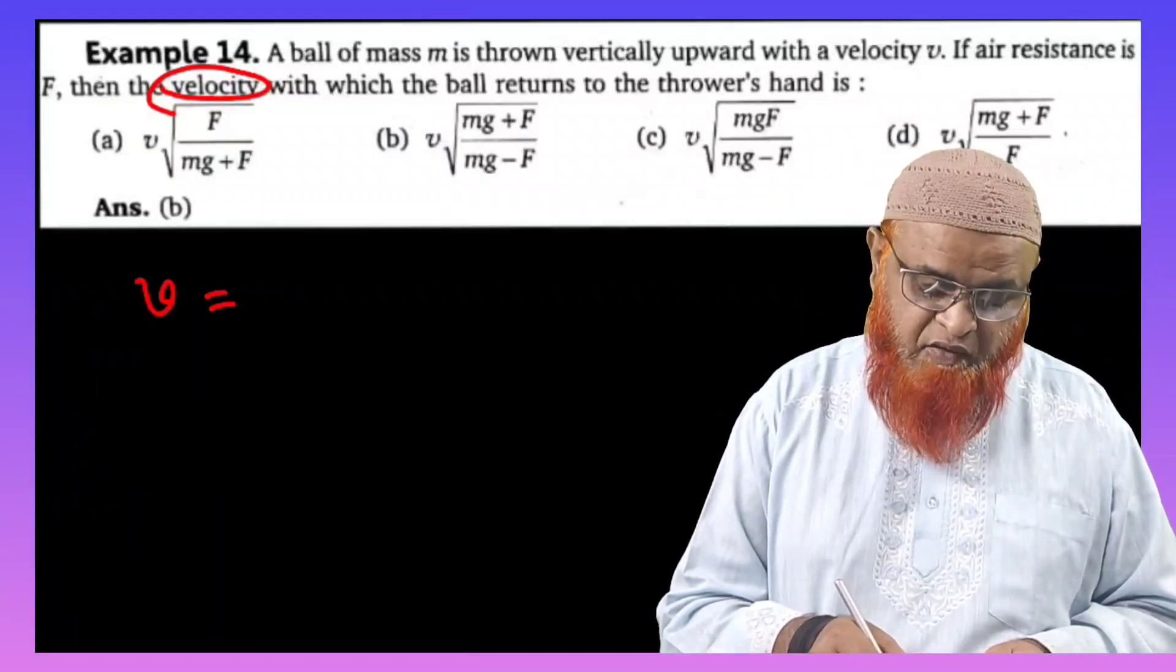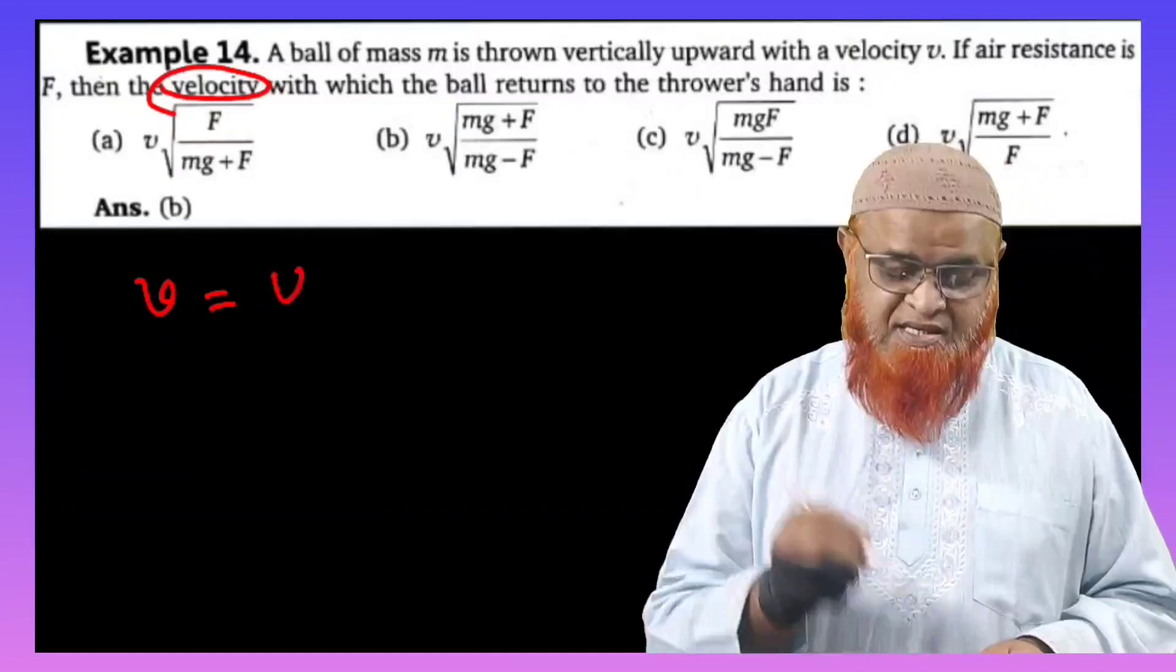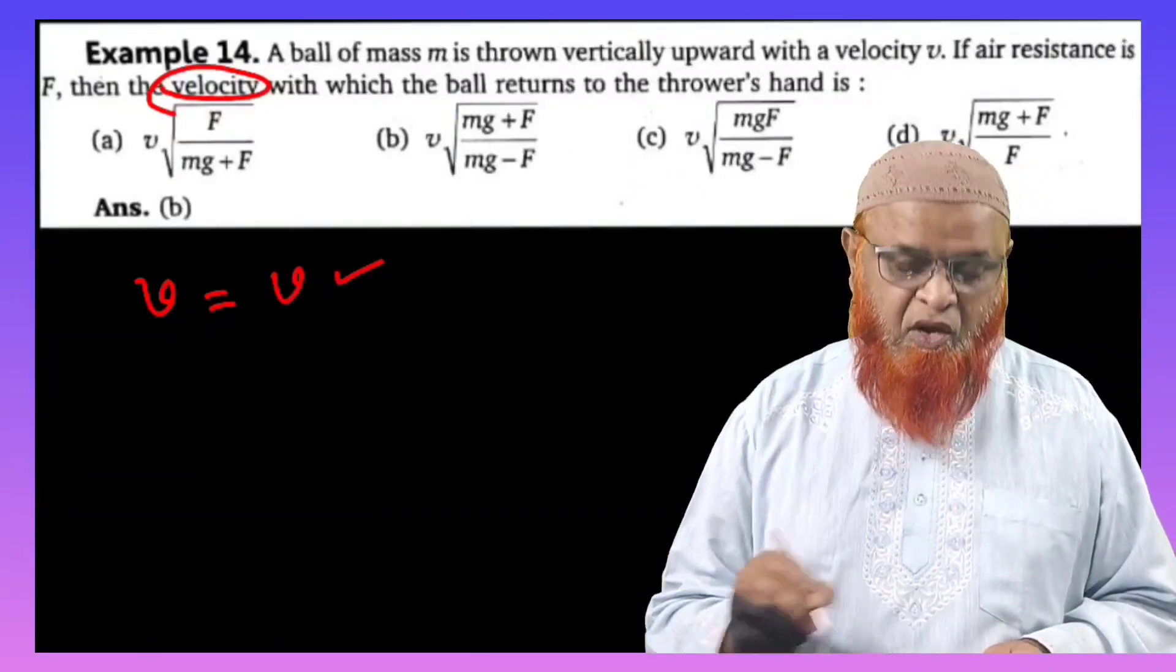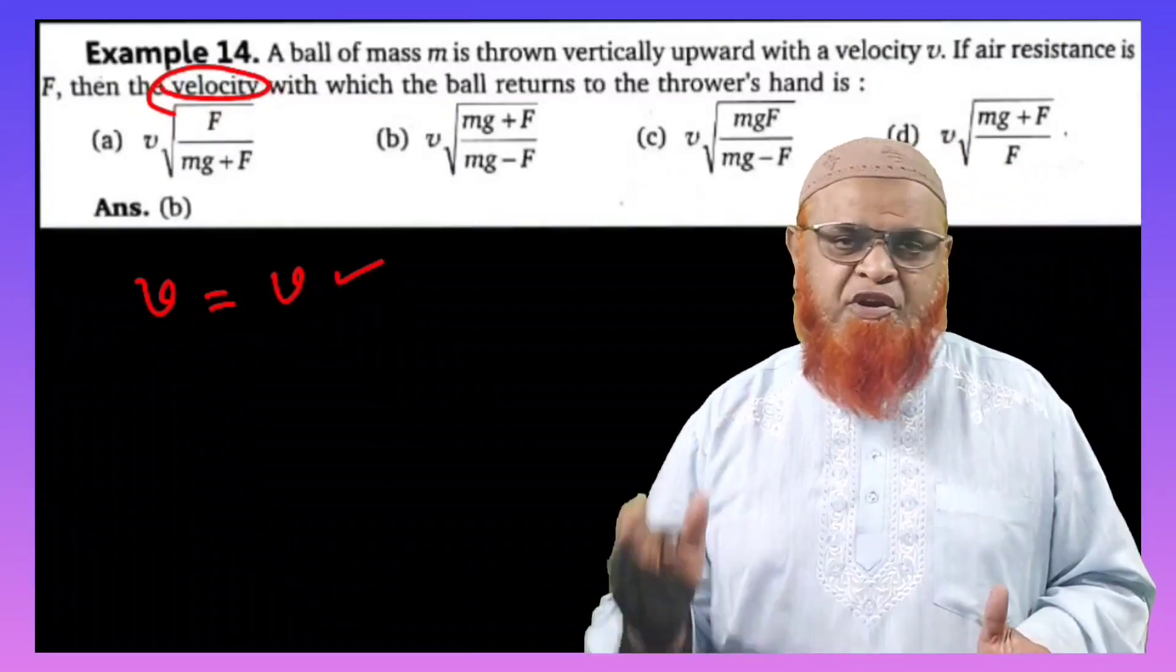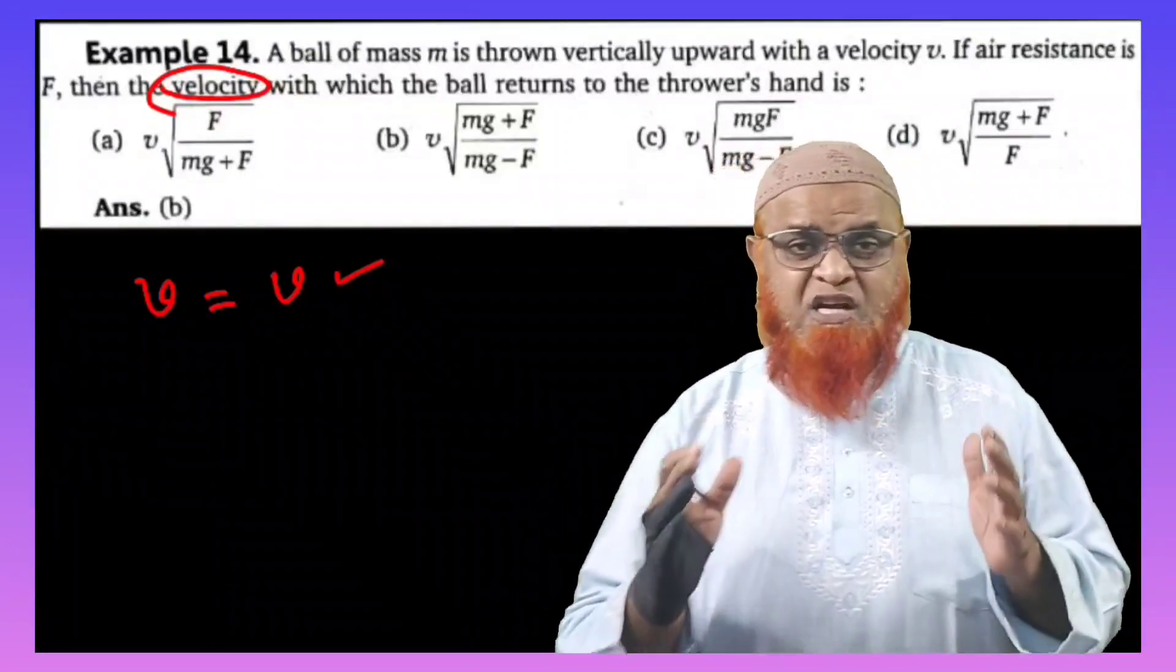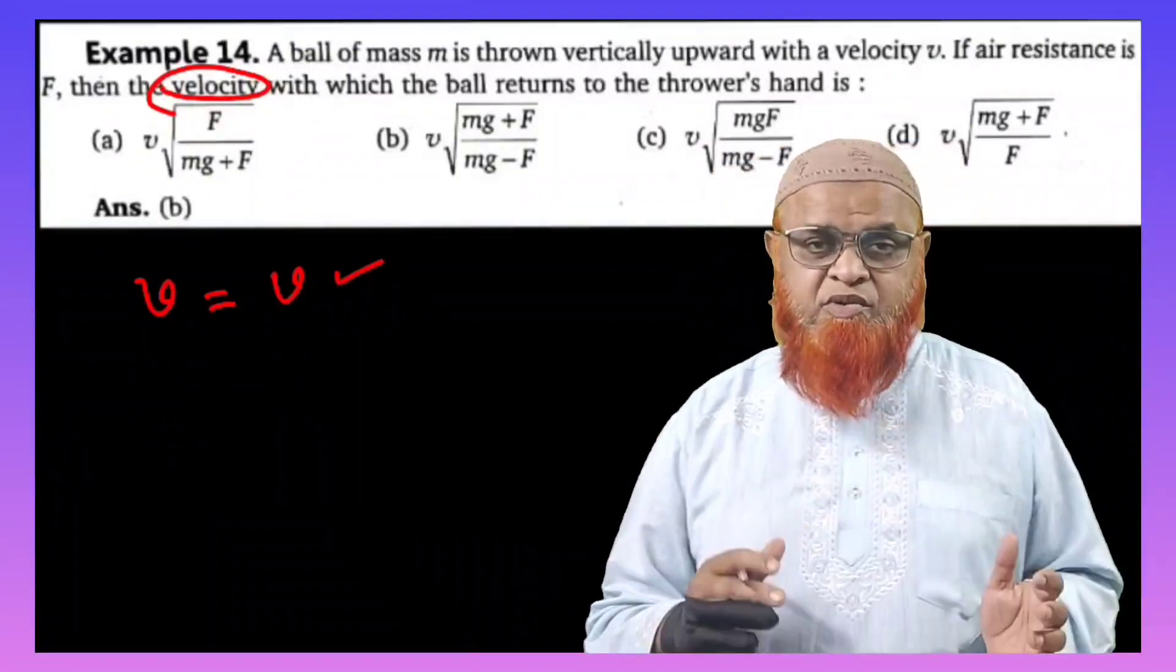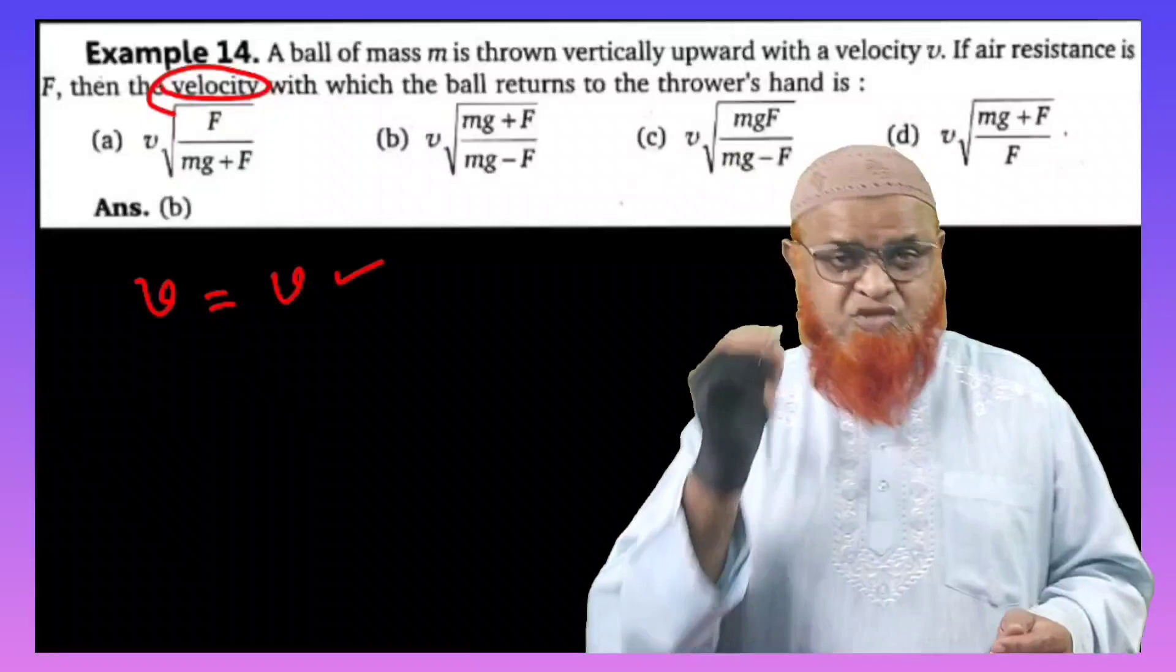He is asking us to find out the velocity at the LHS, and right side also you have to get velocity only. Then only your answer is going to be correct. So how to check whether LHS and RHS are going to be same?